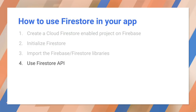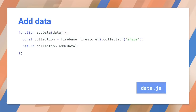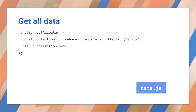The Firestore API is really simple. Here's a sample for adding data to our ships collection in the SpaceRace app. We get a reference to the collection on the Firestore object, and then call the add method with the data we want to add. Getting a specific document is similar — we call the get method on the specific document we want, passing in the doc ID to the doc method. To get all the docs in the collection, we call the get method on the whole collection instead of on a specific doc.